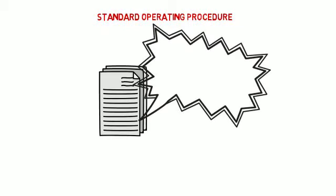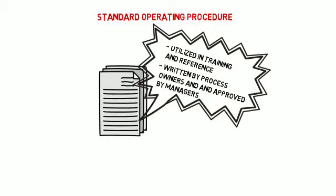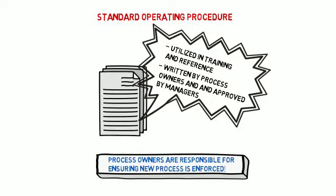In the control phase, a document known as the Standard Operating Procedure, or SOP, is drawn up and utilized in the training and reference for all parties involved on how the new process should flow. The SOP should primarily be written by process owners and approved by managers, with any recommended training being done by the process owners. At the completion of the control phase, process owners are responsible for ensuring the new process is enforced, because the project team is no longer key in driving implementation.